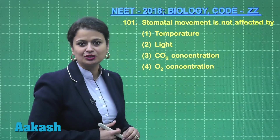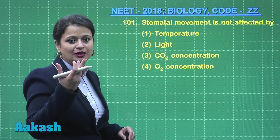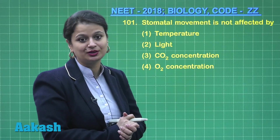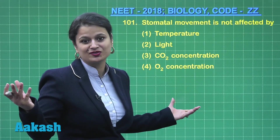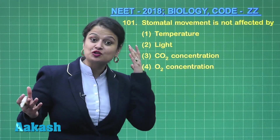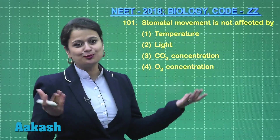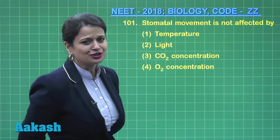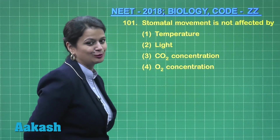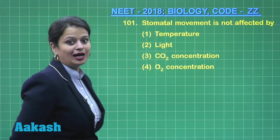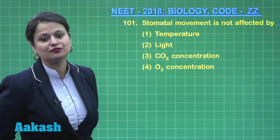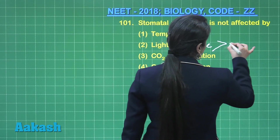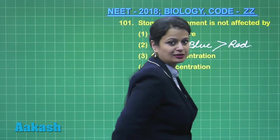When temperature is very high, there is loss of water from the plant, creating a water stress condition. Under this stress condition, there will be production of the stress hormone abscisic acid, which results in stomatal closure. Light is also a very important factor — it is essential for stomatal opening, and blue light is several times more effective than red light in stomatal opening.